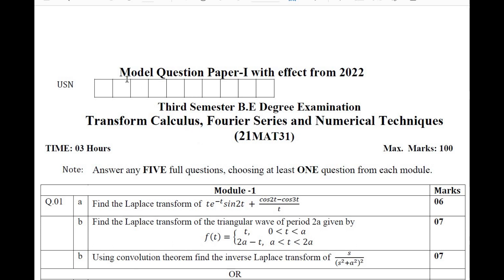In this video, I am going to discuss the Model Question Paper 1 and 2, which has been effect from 2022 for the 3rd semester BE students with subject title, Transform Calculus Fourier Series and Numerical Techniques with Subject Code 21MAT31. It is especially for the 3rd semester students of 21 scheme.